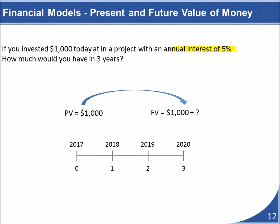Next, let's look at the concept of present and future value of money. All of us who've ever had a bank account understand that given interest rates, our money will grow over time. How much would $1,000 grow over a three-year period if invested at 5%? There are two approaches: simple interest and compound interest.